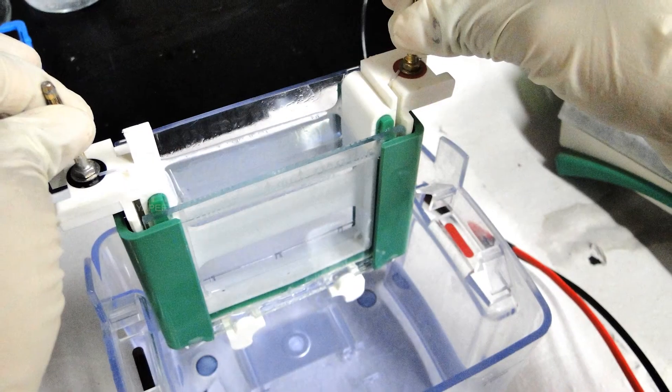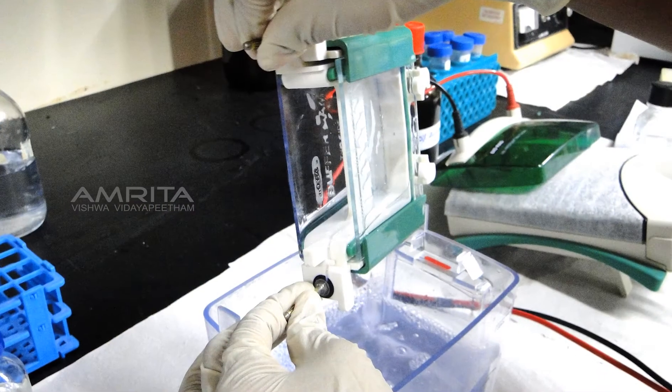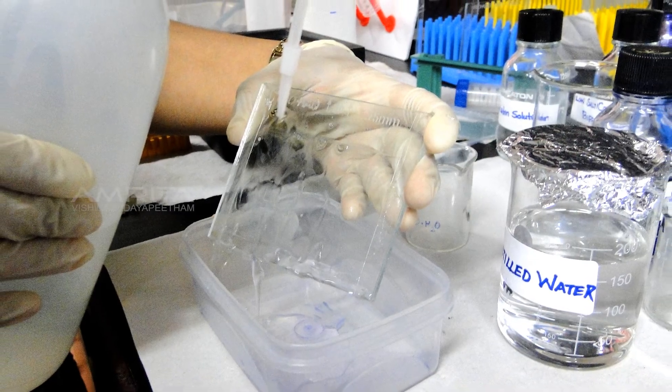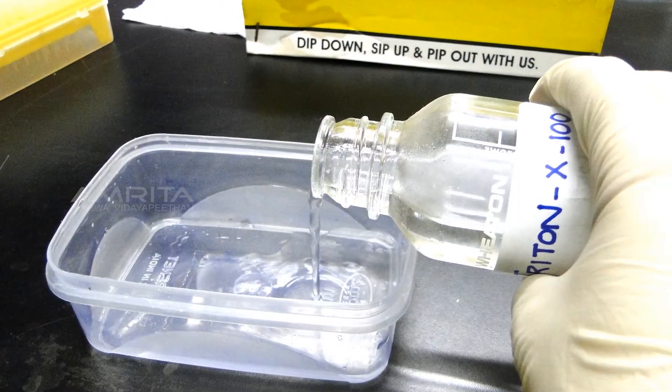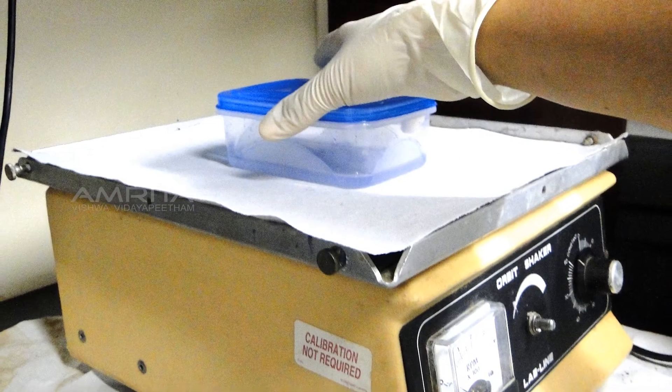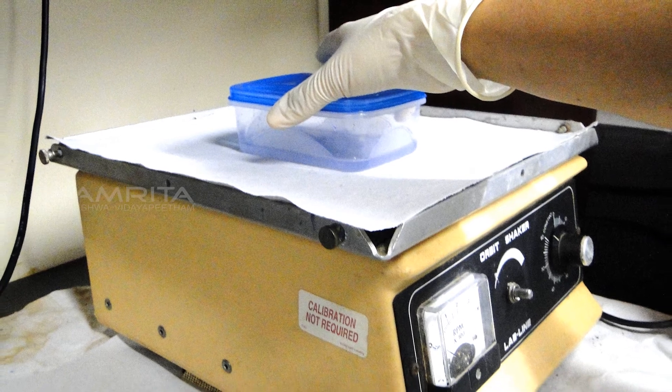Take out the gel plates and remove the gel from the plates into a box. Wash the gel with distilled water. Pour Triton X-100 into the box containing gel and keep it for 5 minutes in the orbit shaker. Repeat this step thrice.